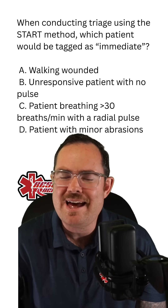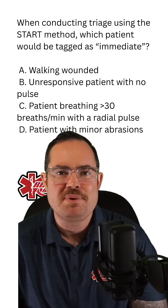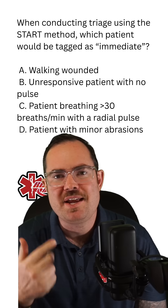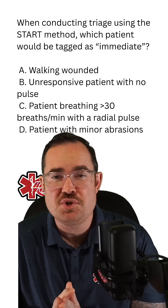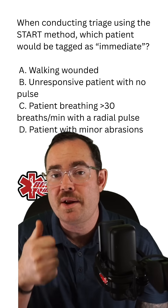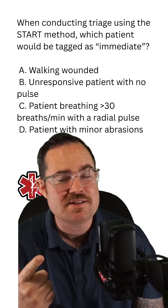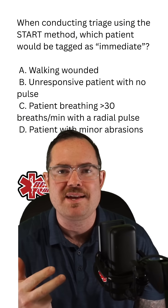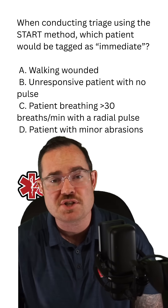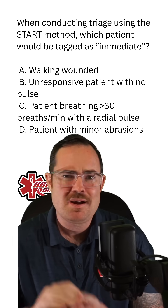Our next category is the red tag, which is what they are asking us about. Don't forget to utilize RPM — that stands for respirations, perfusion, and mentation. I always show students the '32 can do': Are they breathing greater than 30 breaths a minute? Is their cap refill time greater than two seconds? And can they follow commands? If there's a problem with any one of these three, the patient is going to be an immediate or red tag. So obviously, C is the best answer.